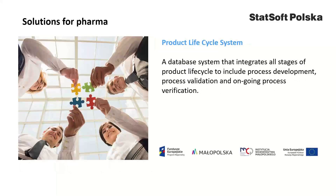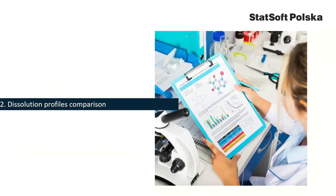In 2020, with the support of the European Union, Stats of Poland developed a system that integrates all stages of the product life cycle, starting with research and development, qualification of the process, and continued ongoing process verification. The system is dedicated to research and development departments interested in implementing a QbD approach, for quality assurance teams that want to monitor the process in real time with detection of adverse trends, as well as for technological departments dealing with improving the effectiveness of manufacturing processes.